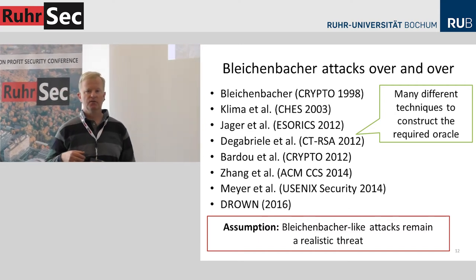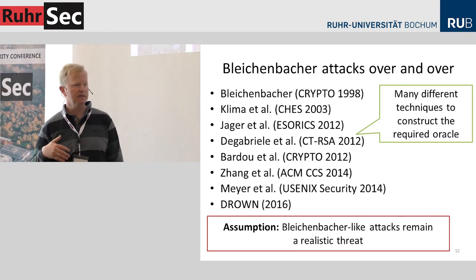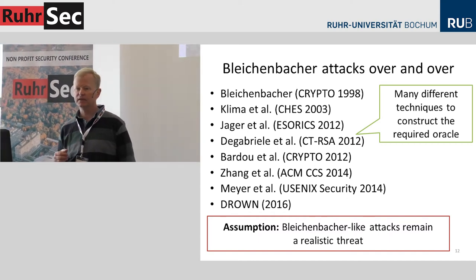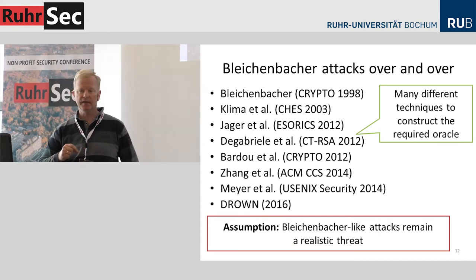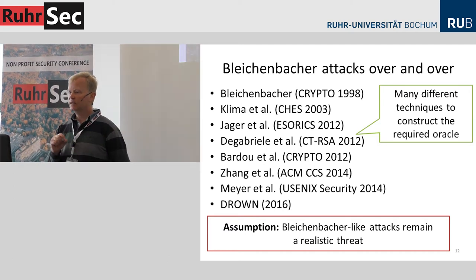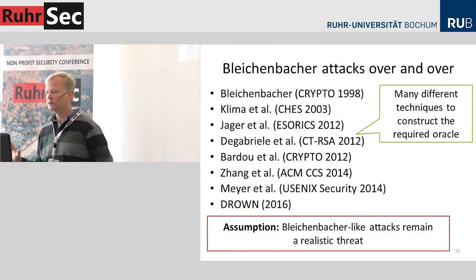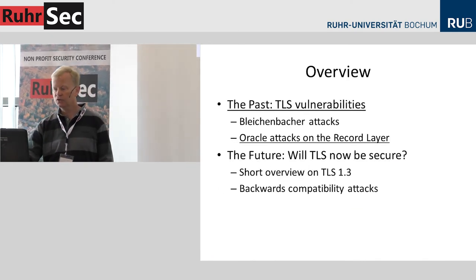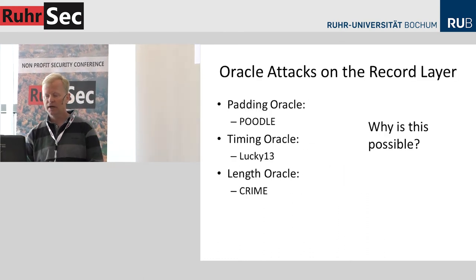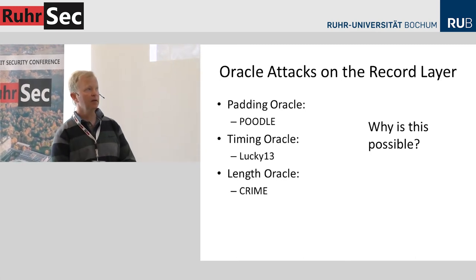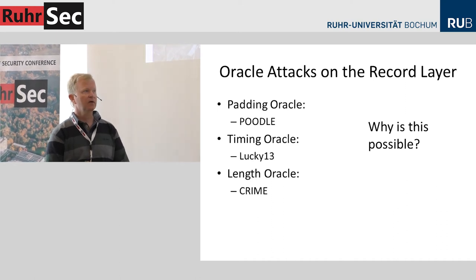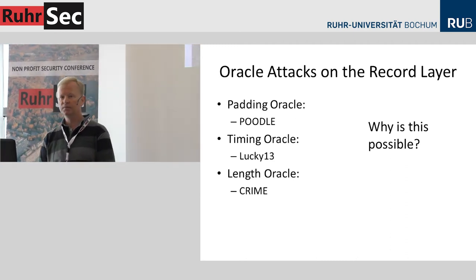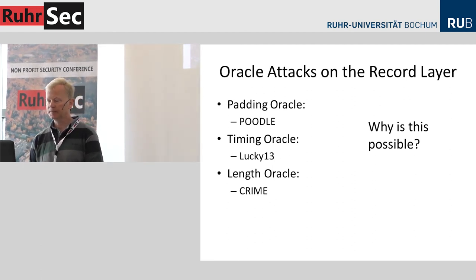Just a short note on oracle attacks on the record layer. Why was this possible? Three examples: a padding oracle — the real padding oracle attack was Poodle, extending Vaudenay's ideas to the padding used in TLS. A timing oracle in Lucky 13. A length oracle in Crime. The reason for at least the first two is the MAC-then-PAD-then-ENCRYPT structure of the old record layer.